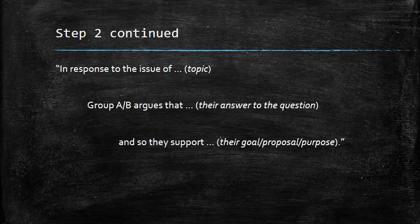You might try to frame it this way: in response to the issue of blank, Group A or Group B — and you might give them a better name than Group A or Group B — argues that blank, which is their answer to your research question, and so they support blank, whatever their goal or proposal might be. For example, in response to the issue of minimum wage, some supporters argue that raising the minimum wage will have an overall beneficial effect on the economy, and so they support passing a federal law to raise the minimum wage to $15 an hour.